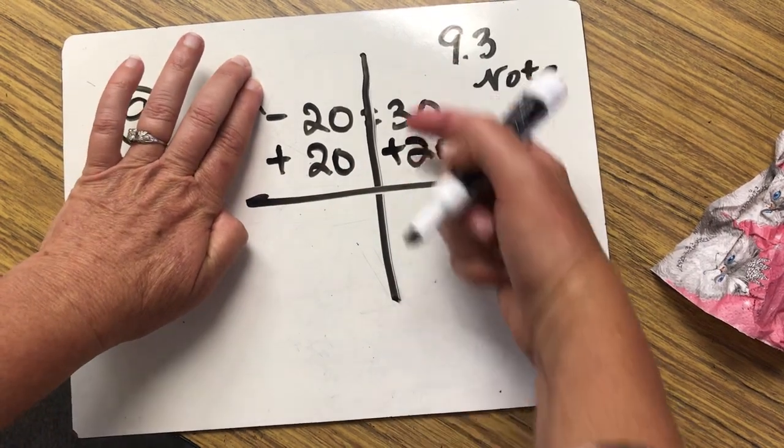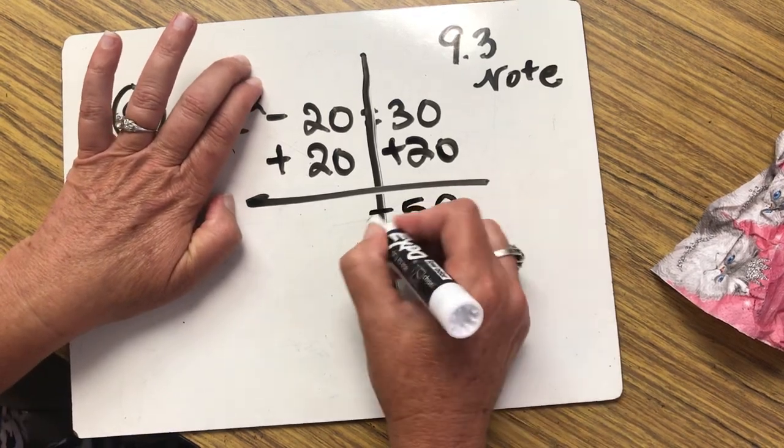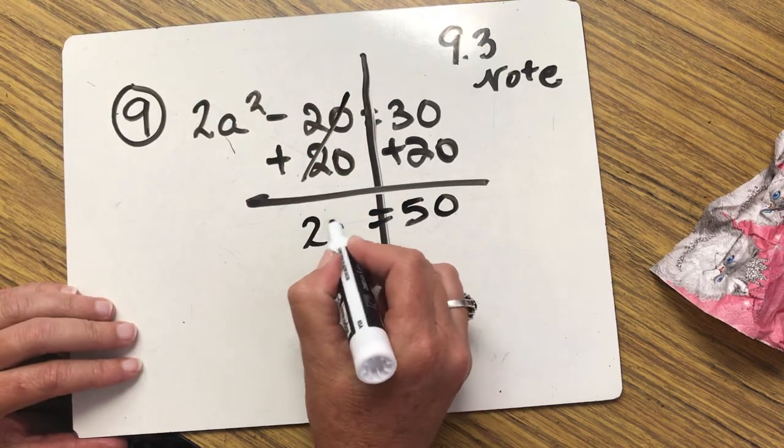I can see that this side, 30 plus 20 more is 50. And this side, they cancel. I'm going to take this whole chunk down.